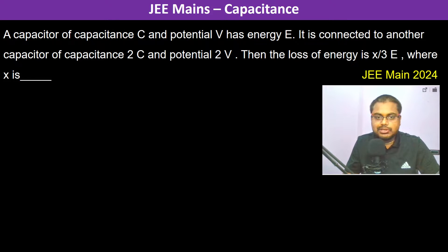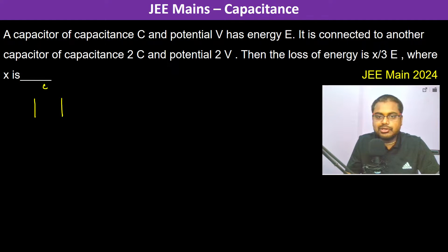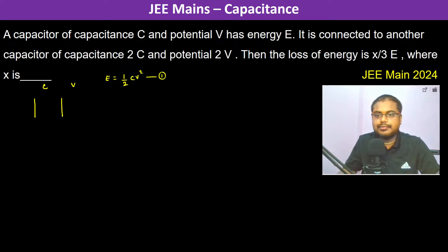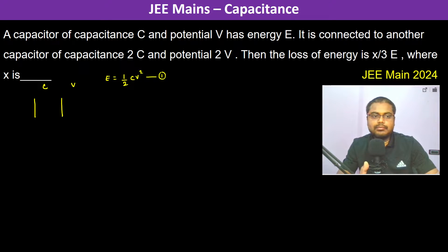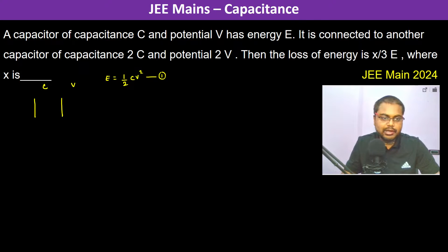A capacitor of capacitance C and potential V has energy E. Therefore, E is equal to half into C V squared.